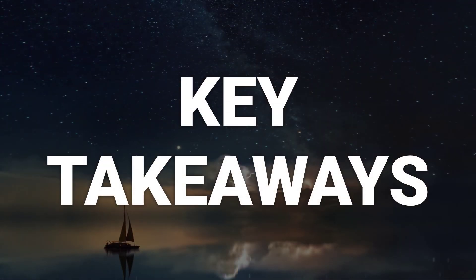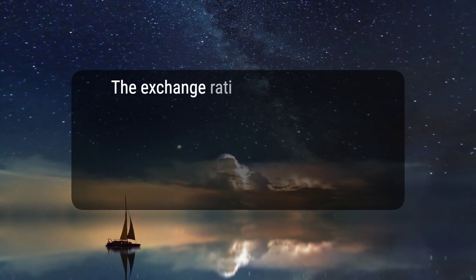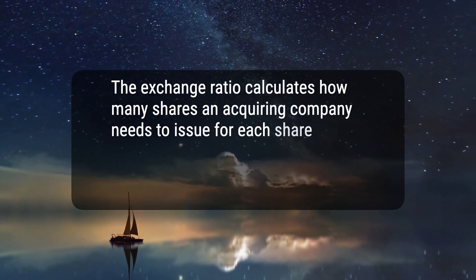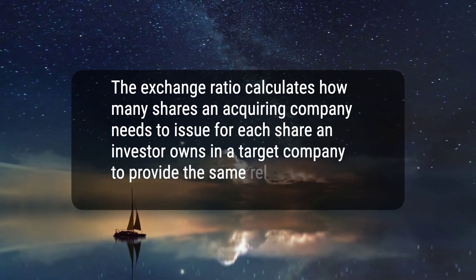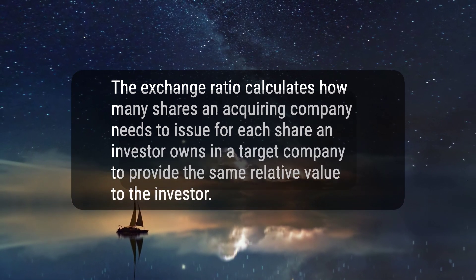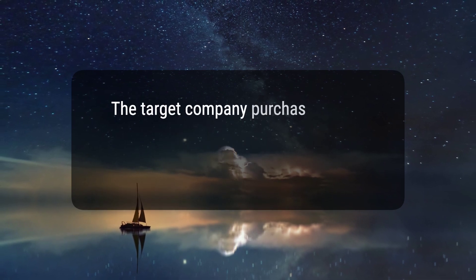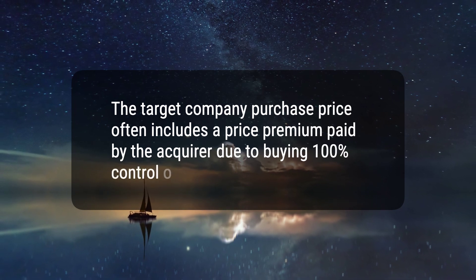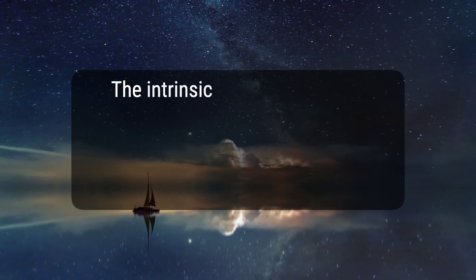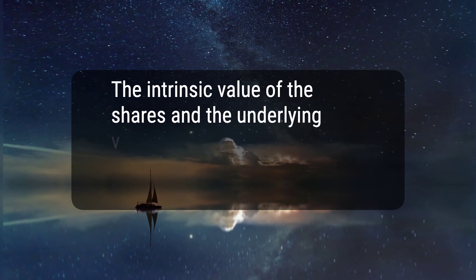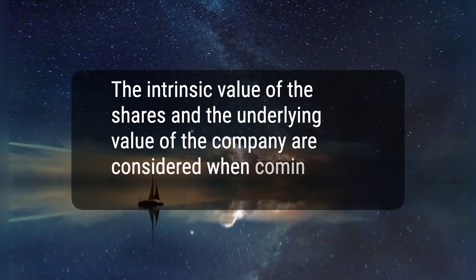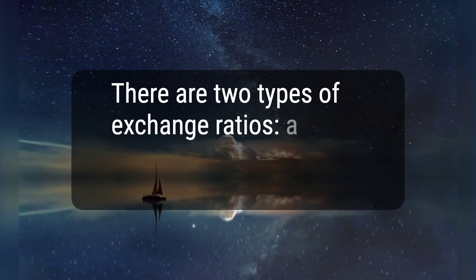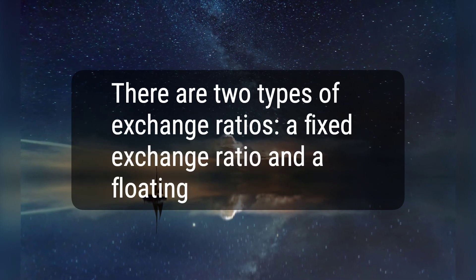Here are four key takeaways. 1. The exchange ratio calculates how many shares an acquiring company needs to issue for each share an investor owns in a target company to provide the same relative value to the investor. 2. The target company purchase price often includes a price premium paid by the acquirer due to buying 100% control of the target company. 3. The intrinsic value of the shares and the underlying value of the company are considered when coming up with an exchange ratio. 4. There are two types of exchange ratios: a fixed exchange ratio and a floating exchange ratio.